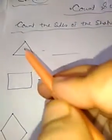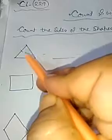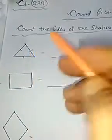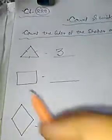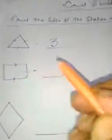Okay, count the sides: one, two, three, so write three here. One, two, three, four.